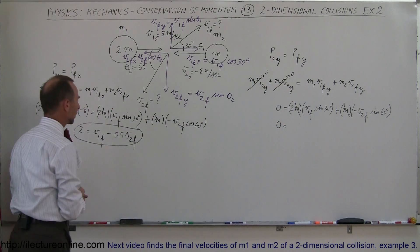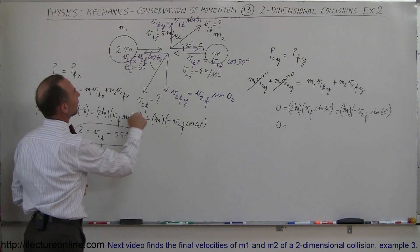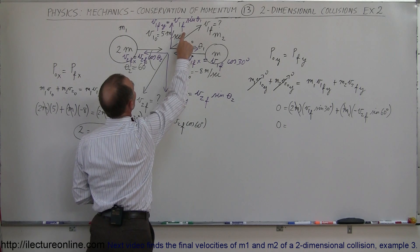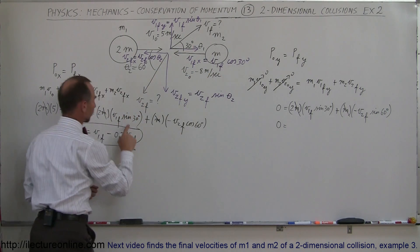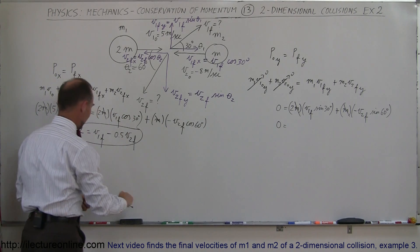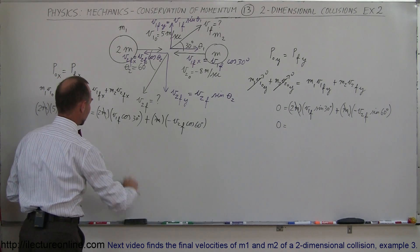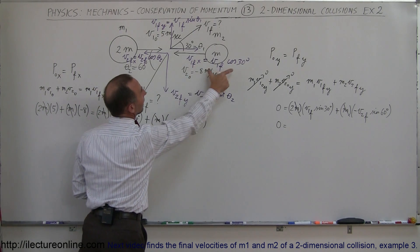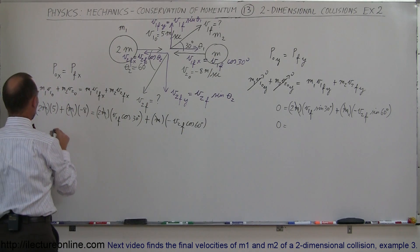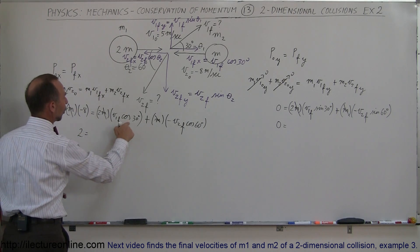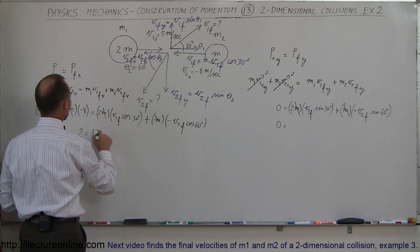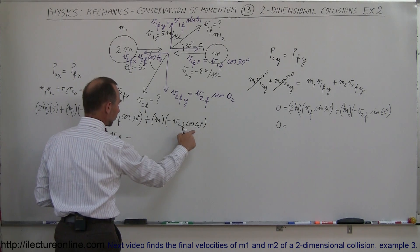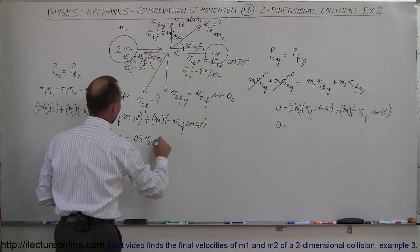Wait — there's a correction needed here. For the x-direction, we want v1 final in the x-direction, which is v1_final times the cosine of 30 degrees, not sine. Let me redo that. So: 2 = 1.732·v1_final − 0.5·v2_final, since cosine 30° is 0.866, and 0.866 times 2 gives 1.732. And cosine 60° is 0.5. That's the correct first equation.